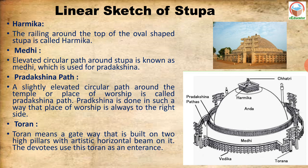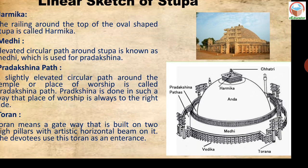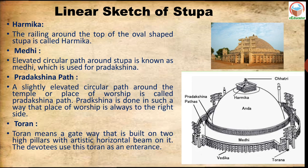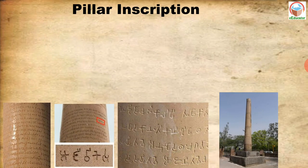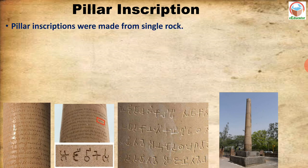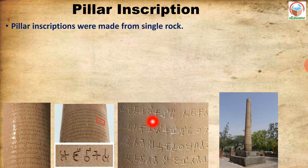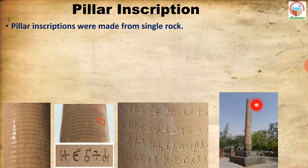Remember this information about the Stupa as it is very useful for board examinations — including the linear sketch and the parts of a Stupa. Now about Pillar Inscriptions of the Mauryan dynasty during the Ashokan period. To inscribe means to write on hard things like stone, wood or iron. Pillar inscriptions are written messages carved on pillars, which were sent to society.